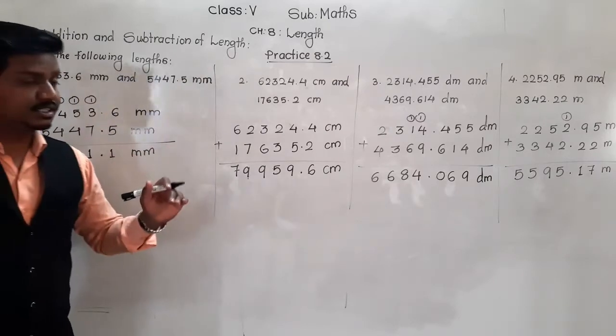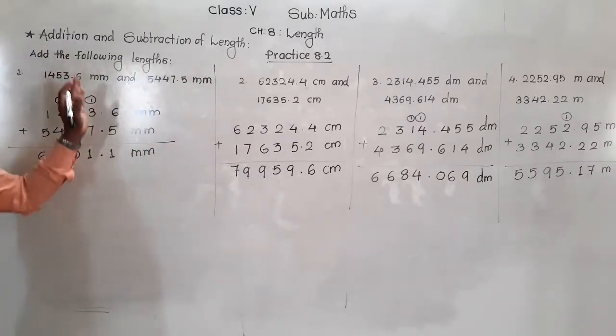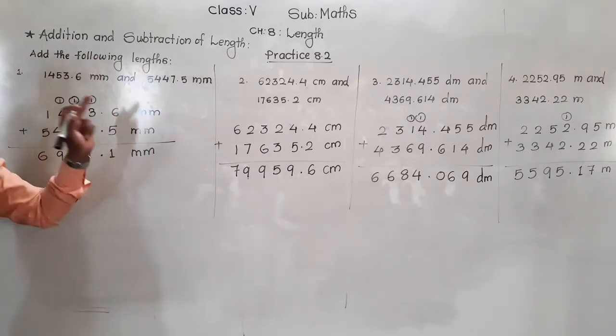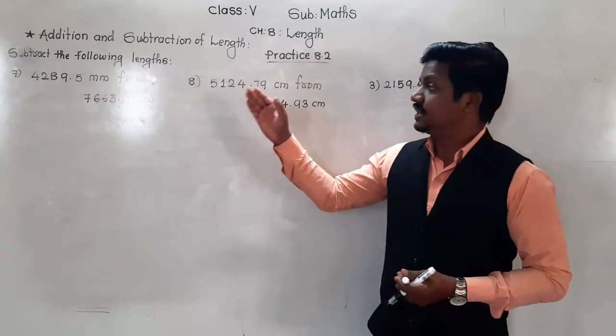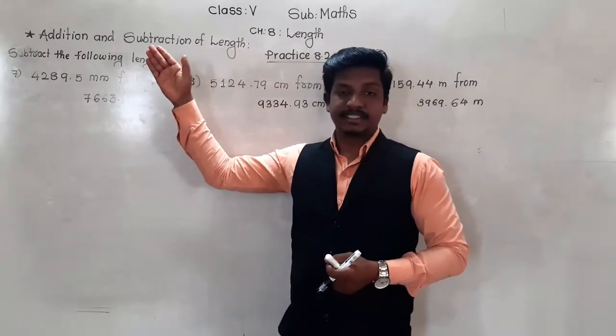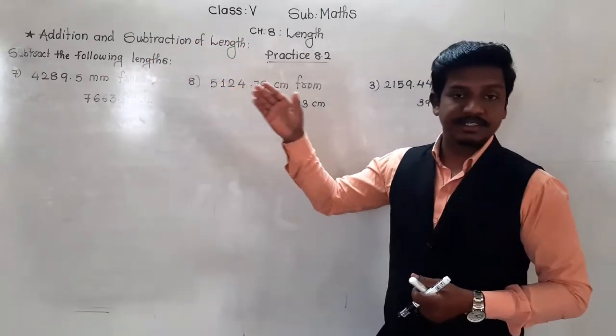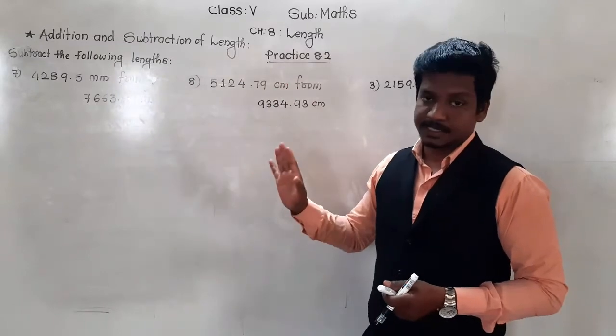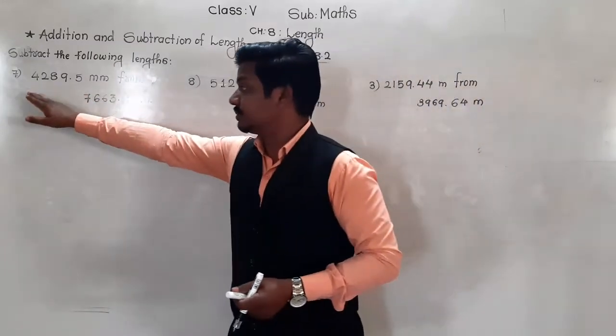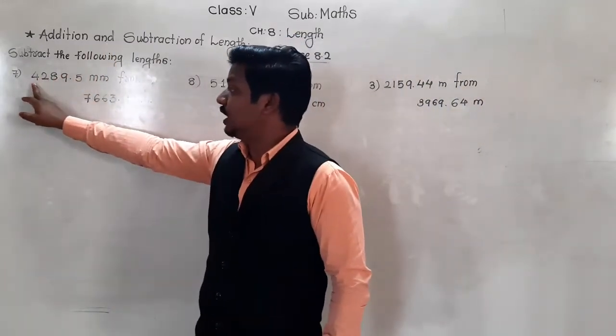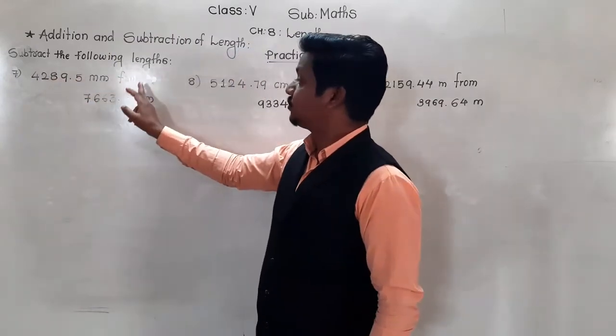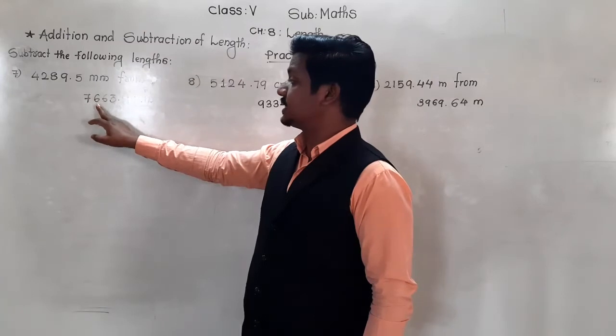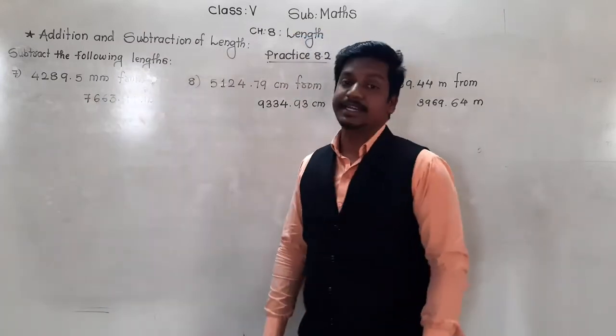In this way we have to add the two lengths or three lengths, whichever are given there. Write these four examples in your notebook. Two examples are remaining, this version try by yourself. After that we will see subtraction. See now subtract the following. Next examples, examples from 7 to 10 are of subtraction.